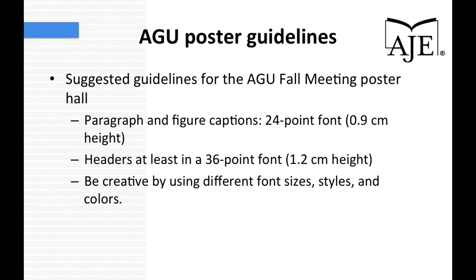AGU suggests that paragraphs and figure captions be 24 point font or 0.9 centimeters in height, and that headers be at least 36 point font. Be creative by using different font sizes, styles, and colors. However, some font styles and colors can be distracting and draw attention away from your actual research. Bright colors are difficult to read and colors such as yellow don't print very well. The poster must be creative, yet still readable and legible.